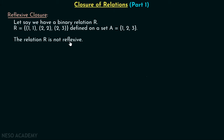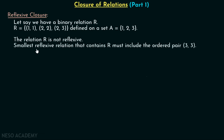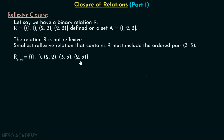Let's say we are interested in finding the smallest reflexive relation possible that contains R. In order to find that smallest reflexive relation, we must include the ordered pair (3,3) inside R. Then the new relation will look like this: {(1,1), (2,2), (3,3), (2,3)}. This is the smallest reflexive relation possible that contains R. So it is clear that in order to make this relation reflexive, we must include (3,3) in this particular relation.